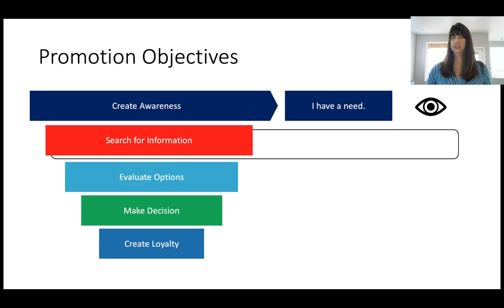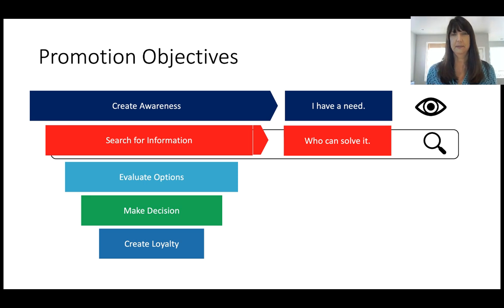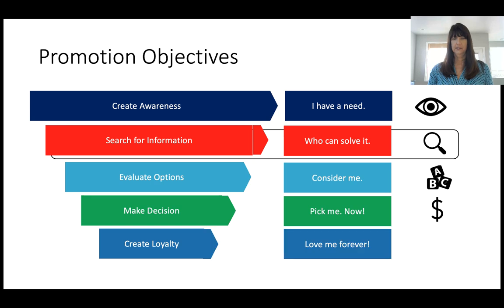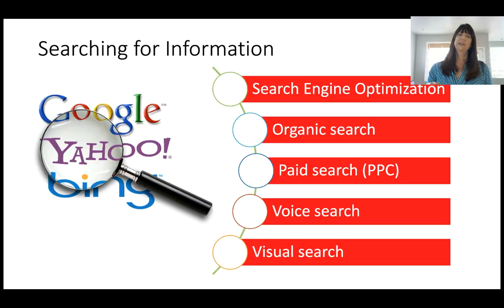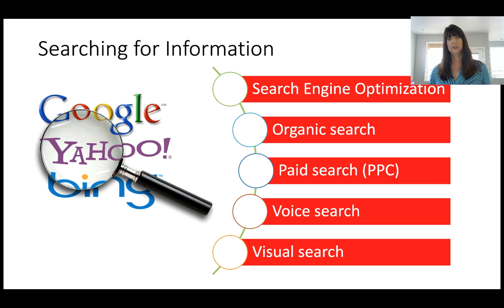Now back to promotion objectives — we're done with creating awareness. Now we're at searching for information. Ensuring as a company that you are found when somebody is searching for their need. Most of us start our product and service inquiries through a search engine — we call that search engine optimization. Like Google or Yahoo, but most of us start on Google. There are different types of searches: organic and paid, and also voice search and visual search.